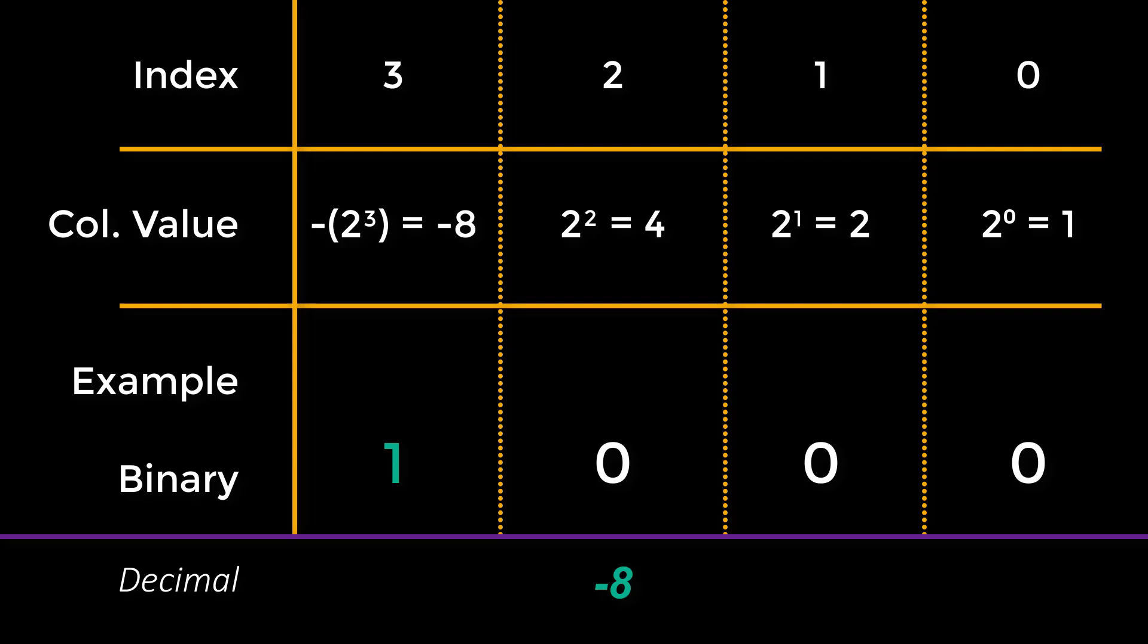We can see how this works by trying out some different numbers. As before, all zeros is 0. Also as before, setting the bottommost 3 bits to a 1 gives us 4 plus 2 plus 1, which is 7 in decimal. But now, if we set just the topmost bit, that means minus 8. And so minus 8 plus 0 plus 0 plus 0 is minus 8 overall in decimal. Now, if we set all the bits, we have minus 8 plus 4 giving us minus 4, plus 2 giving us minus 2, plus 1 giving us minus 1 overall. That's minus 8 plus 4 plus 2 plus 1 is minus 1 overall.